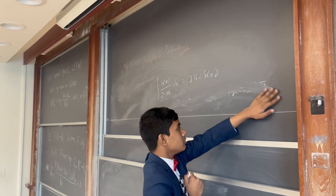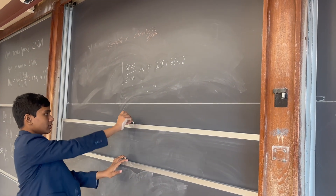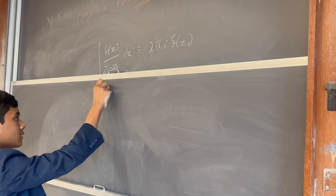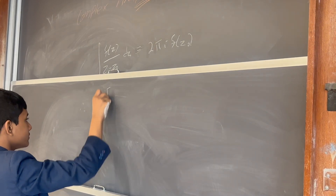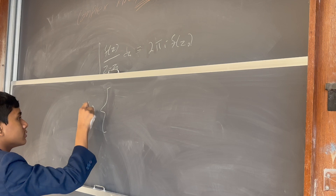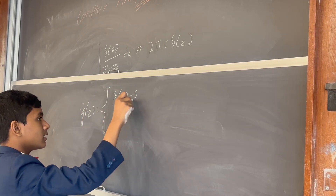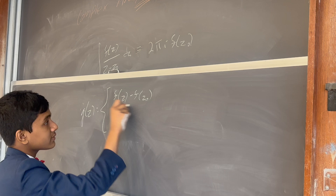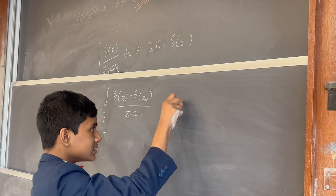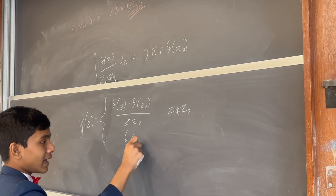So, how do we prove such an elegant statement? Well, the function g(z) is equal to f(z) minus f(z-naught) over (z minus z-naught) everywhere except z-naught, and is equal to f-prime of z-naught at z-naught.